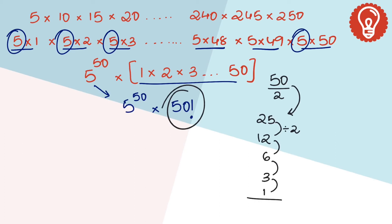Next, let's find the number of 5s in 50 factorial. 50 when divided by 5 is 10, 10 divided by 5 is 2. Sum of it is 12.